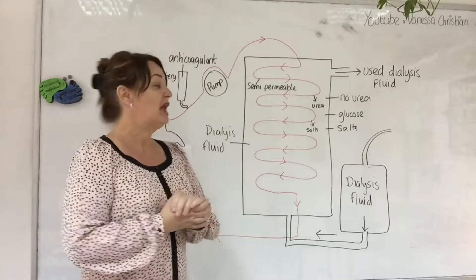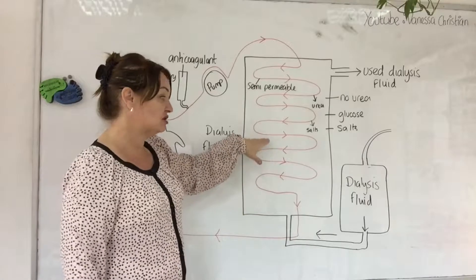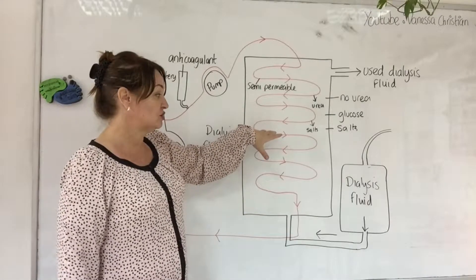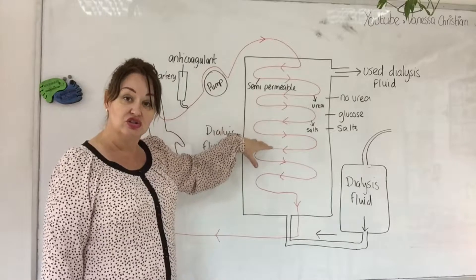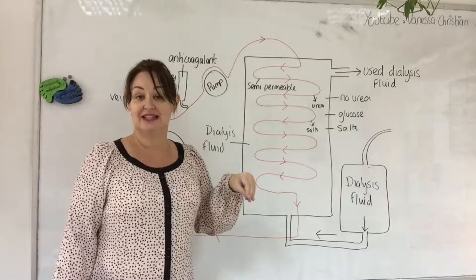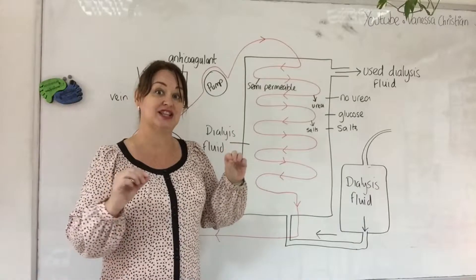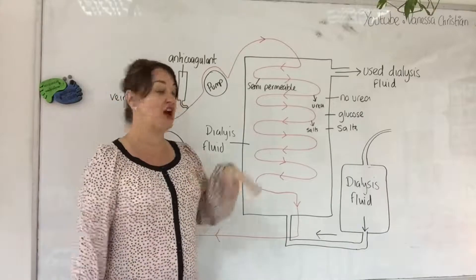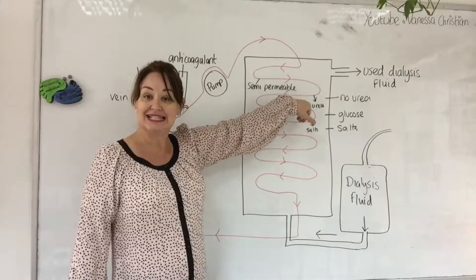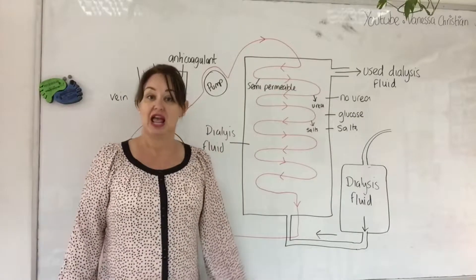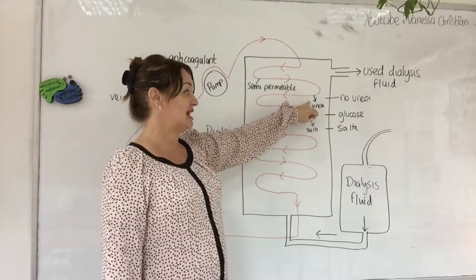Salts: you might have consumed a lot of salty food and you need to remove those salts from your blood. The best way to do that is to put salts in the dialysis fluid. Why? Because salt will move out until the concentration is the same inside the blood and outside in the dialysis fluid, getting it to the optimum concentration. Urea however won't be contained in this dialysis fluid and we want to get rid of that from the blood, so it will pass out into the dialysis fluid.